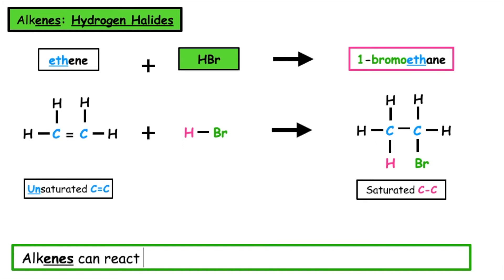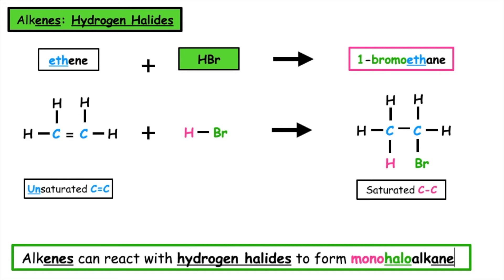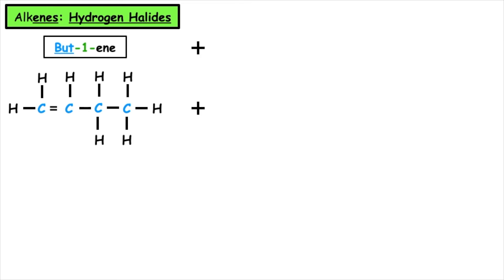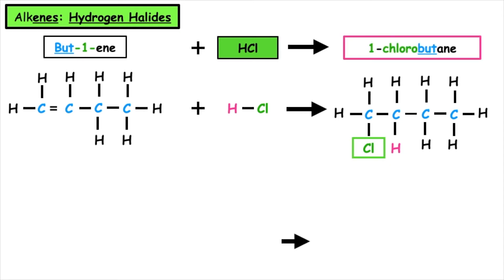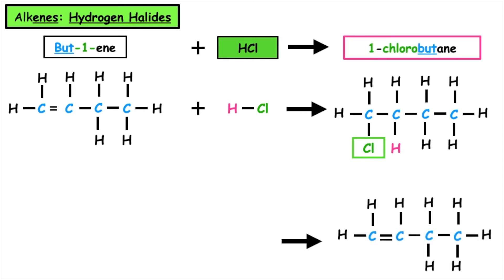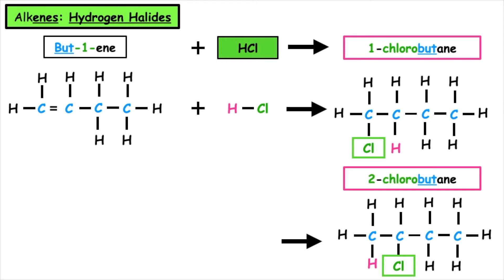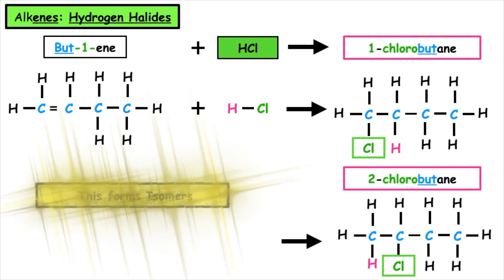Alkenes can react with hydrogen halides to form mono-haloalkanes. When we add hydrogen chloride, a hydrogen will add to one of the carbons and the chlorine will add to the other. The name of this compound would be 1-chlorobutane. However, if they swapped positions and the hydrogen added to the other carbon and the chloride swapped, this would now be called 2-chlorobutane. This will form isomers.